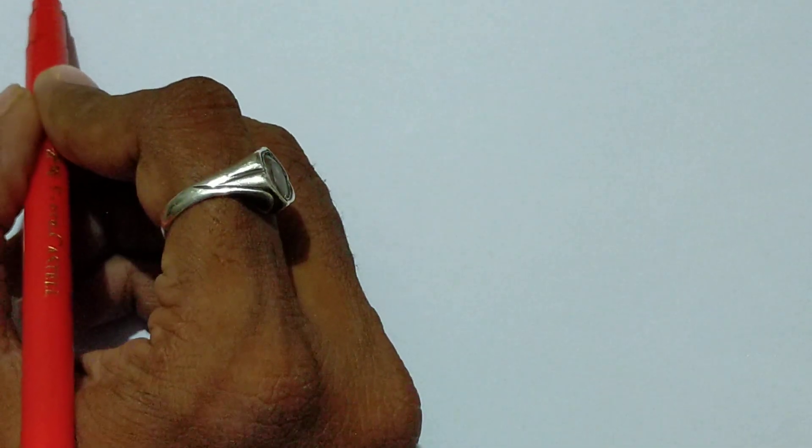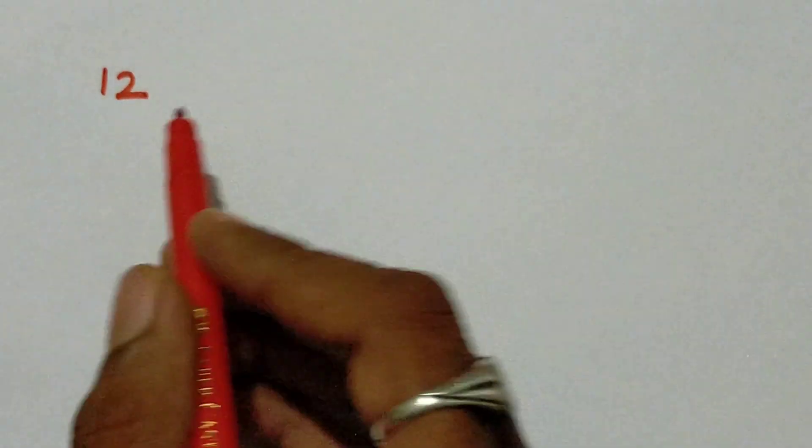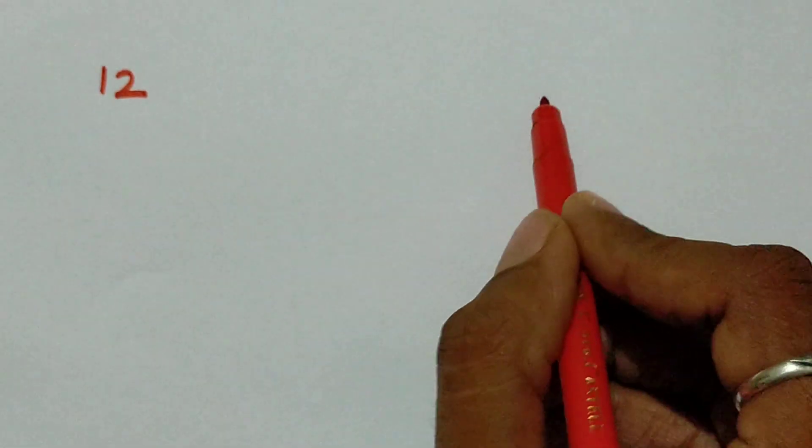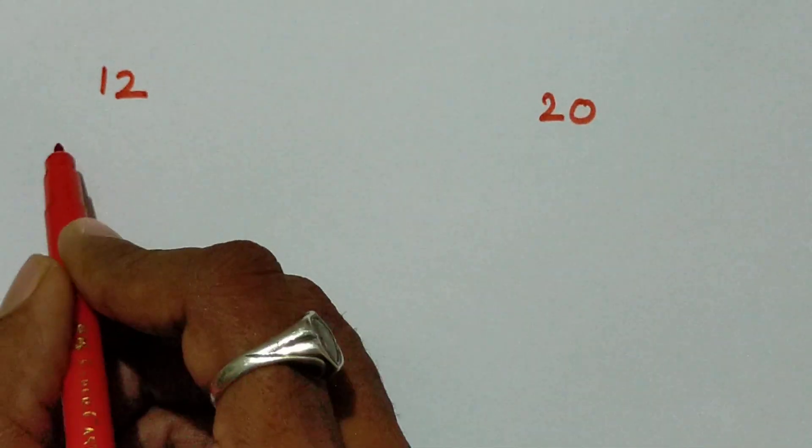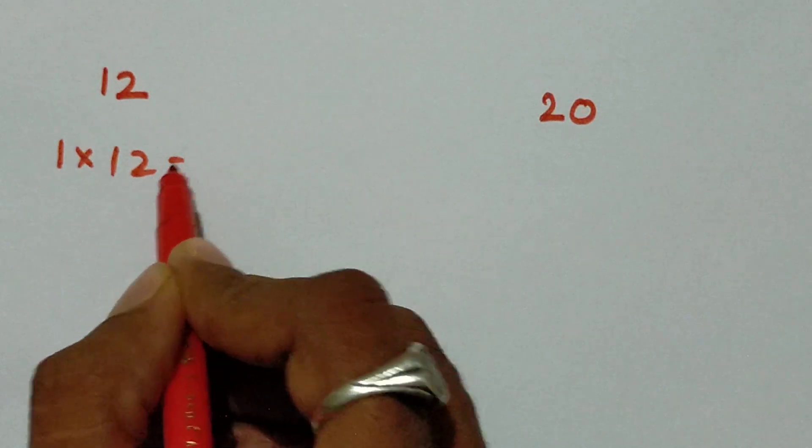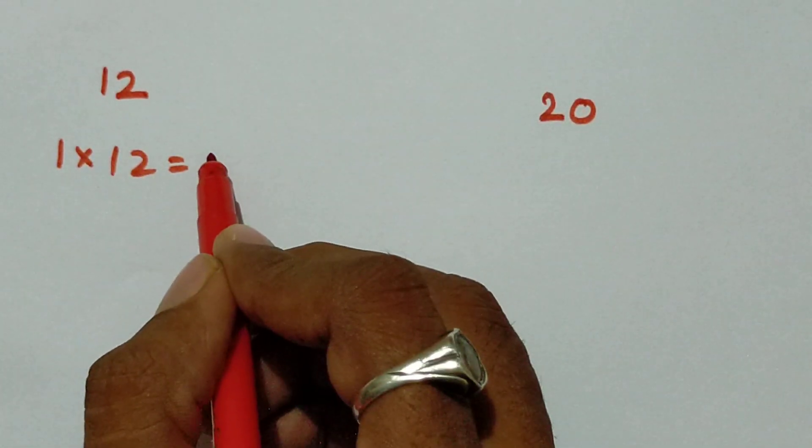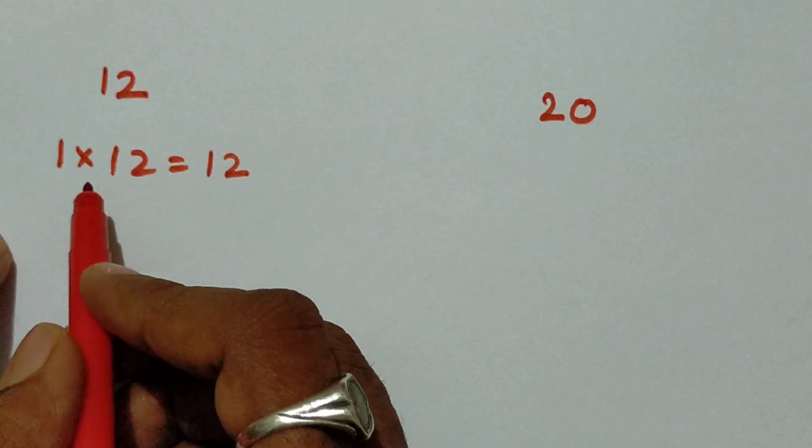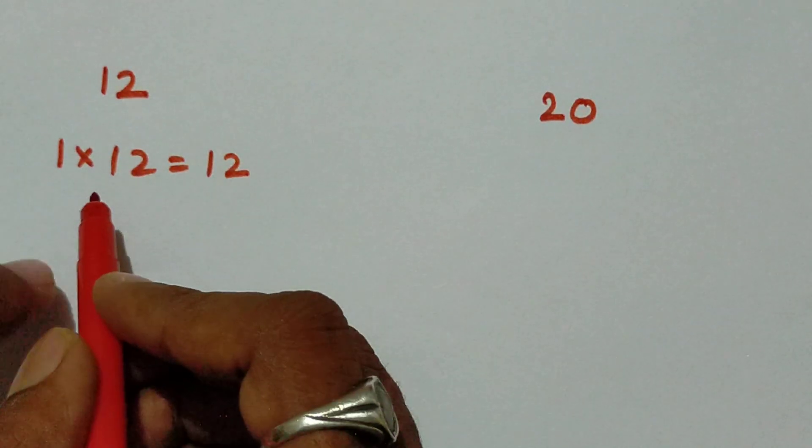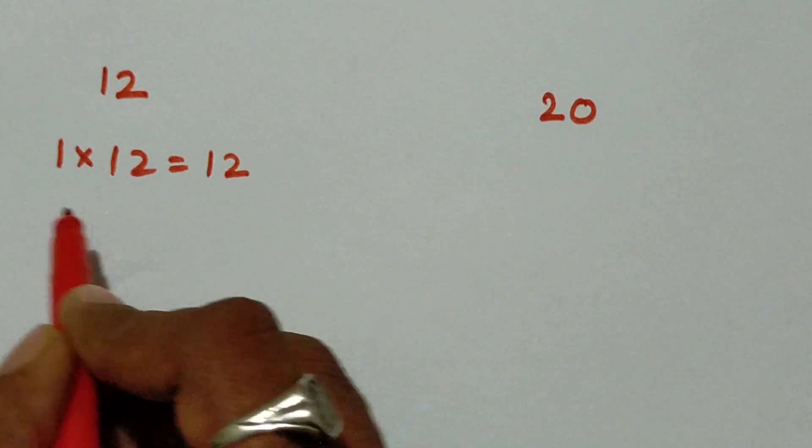Let's see the solution. First of all, we have to find out the factors of 12 and factors of 20. We already learned how to do it in the previous video. Here I am going to tell you one technique to find out the factors very easily.